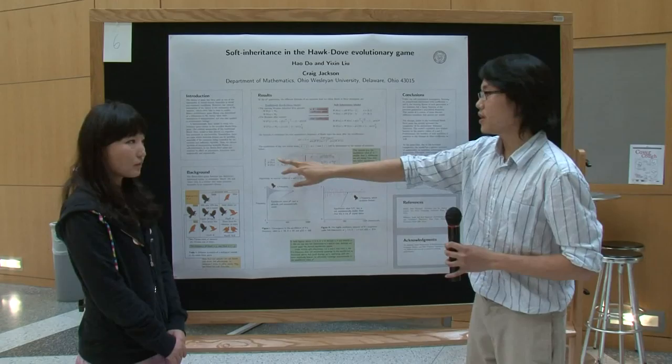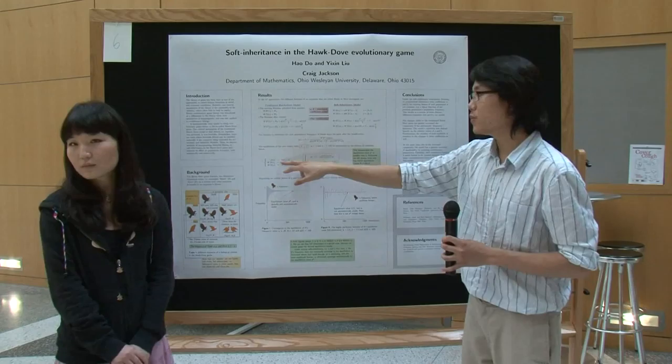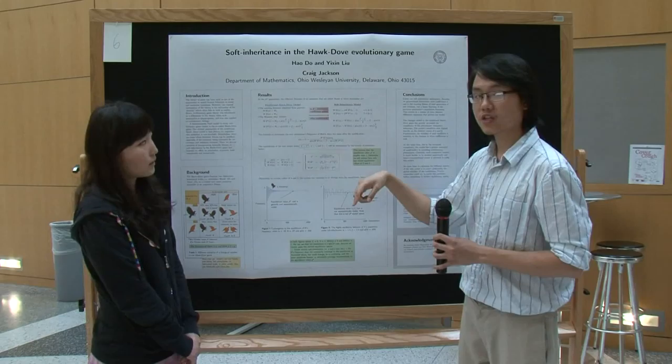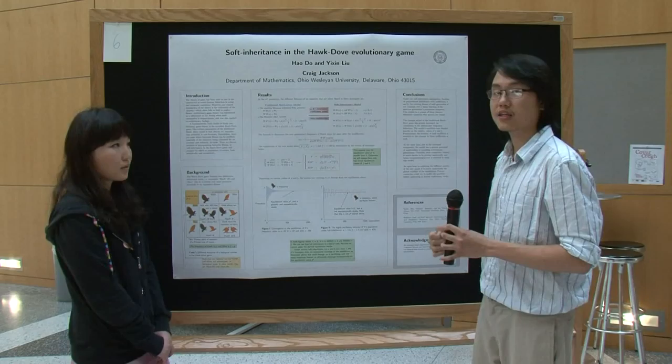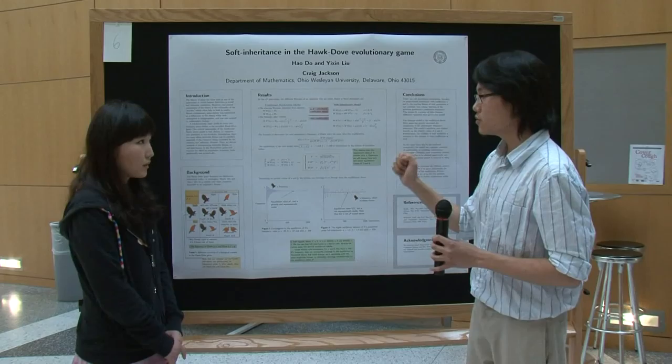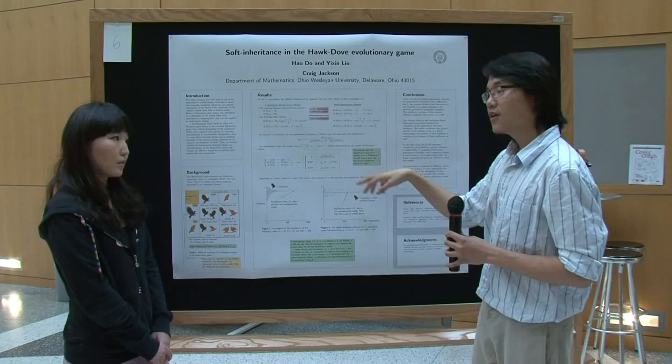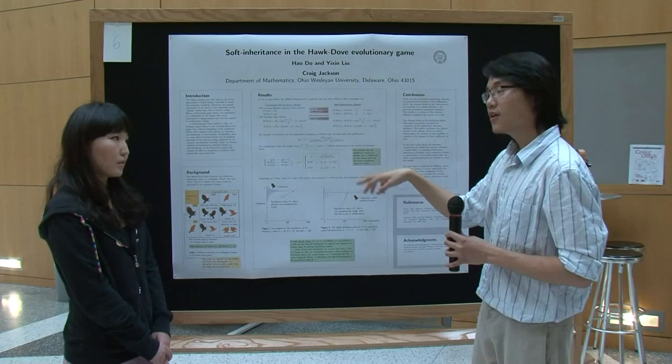In the old model, to find the equilibrium, we only need a single equation: pn equals p(n+1), asserting the frequency of hawks at generation n to equal the frequency at generation n+1. But in our new model, since we have three different recursive relations happening at the same time, they must all change together. To assert equilibrium, we had to make all of them reach equilibrium simultaneously, and we solved this analytically to find the exact solutions of these equilibrium values.